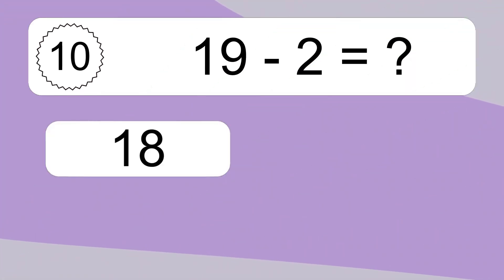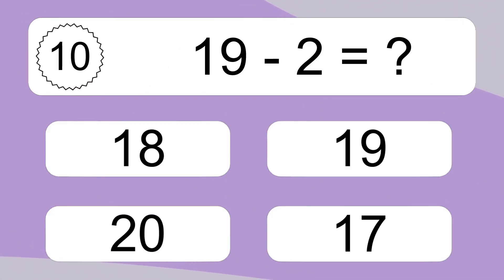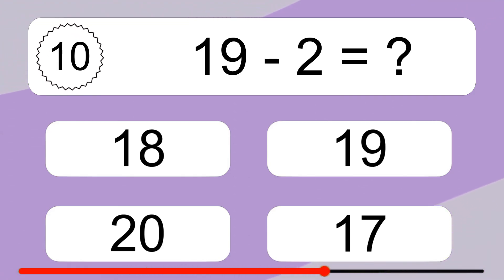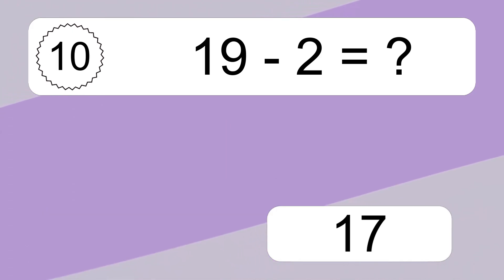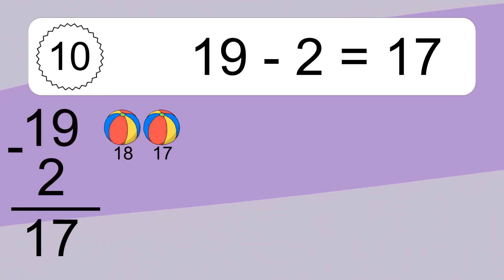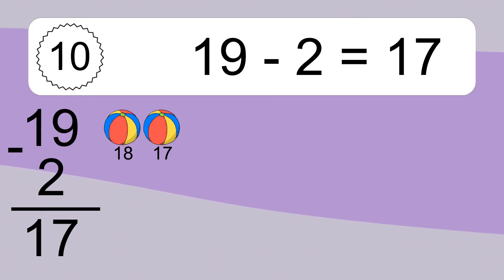19 minus 2 equals what? 19 minus 2 equals 17. Let's count it: 18, 17.